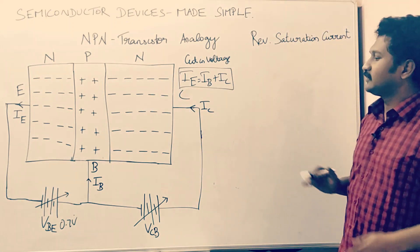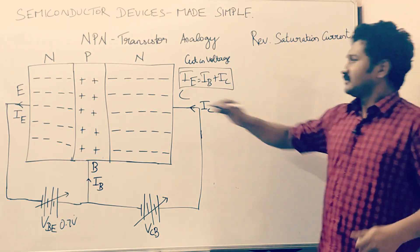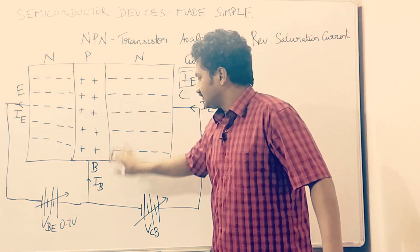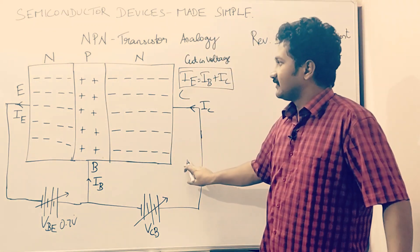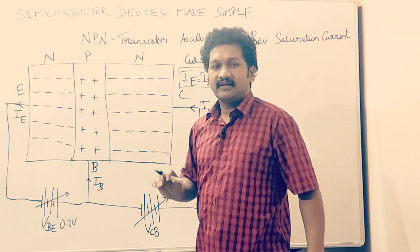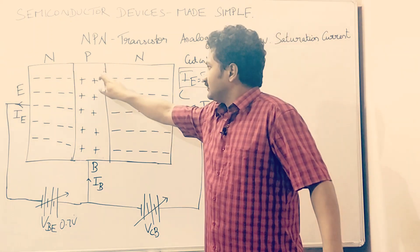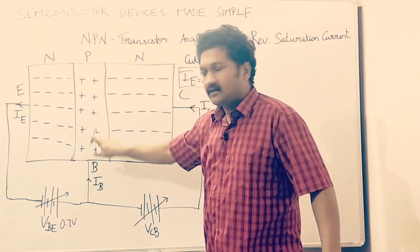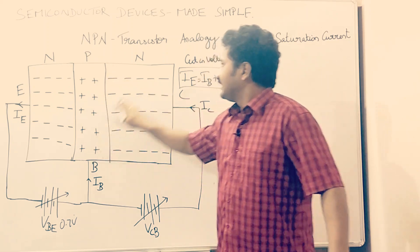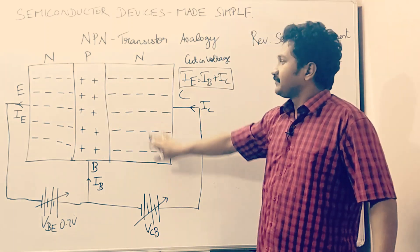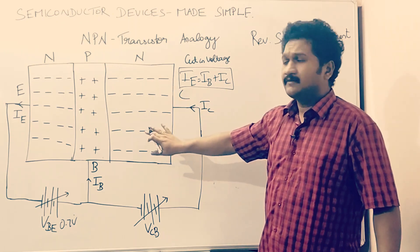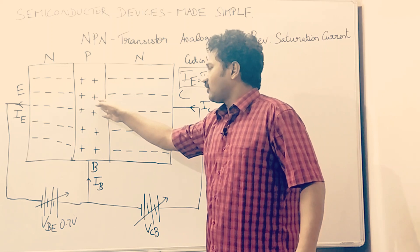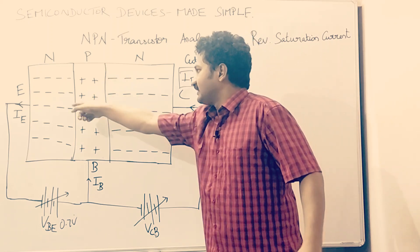So what is reverse saturation current? If you can see in this PN junction, at the junction of the base and the collector — what is the reverse saturation current? Here in the base region, in the P region, holes are the majority carriers. In the N or the collector region, electrons are the majority carriers. There occurs a transmission of electrons from the base region.